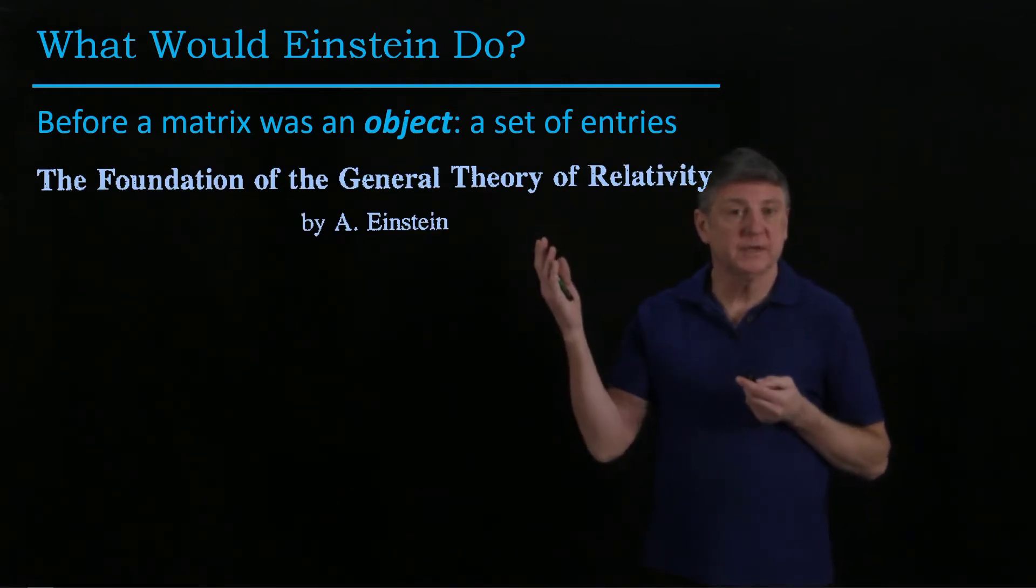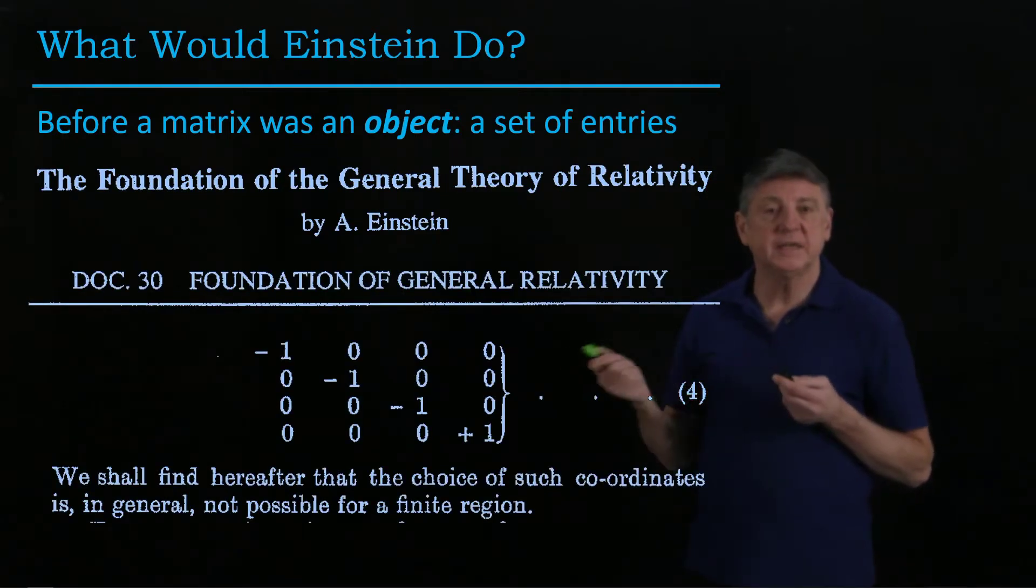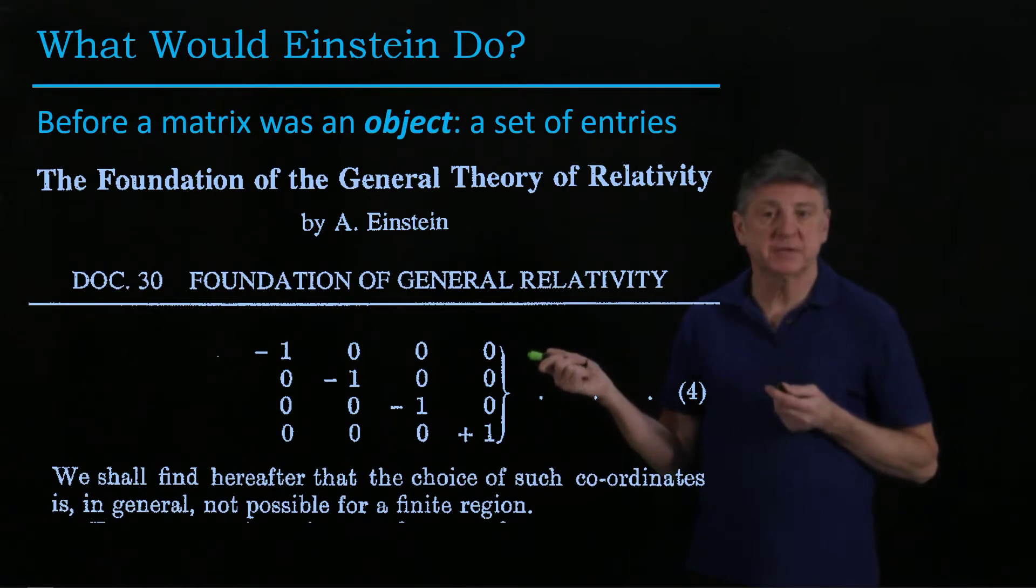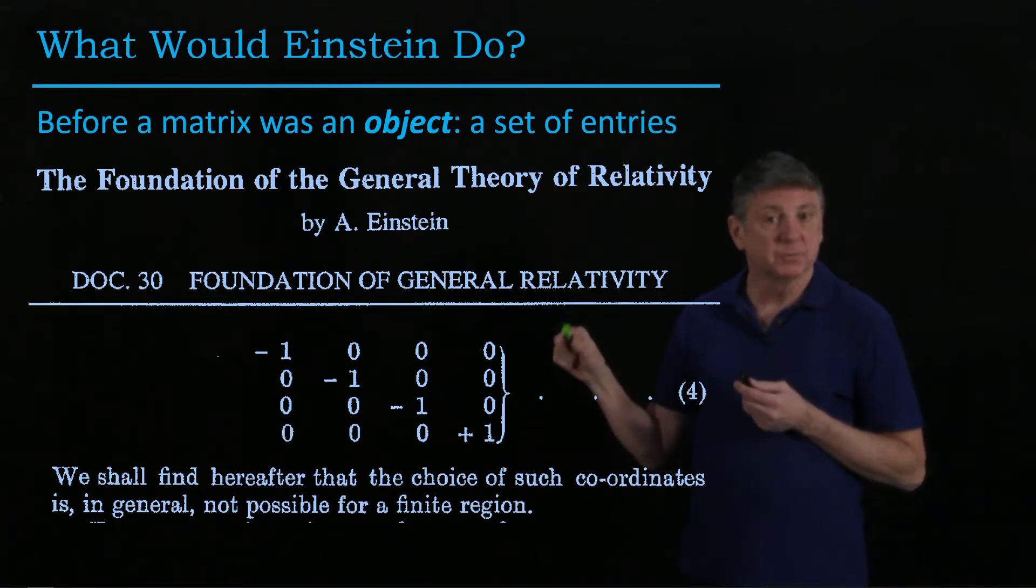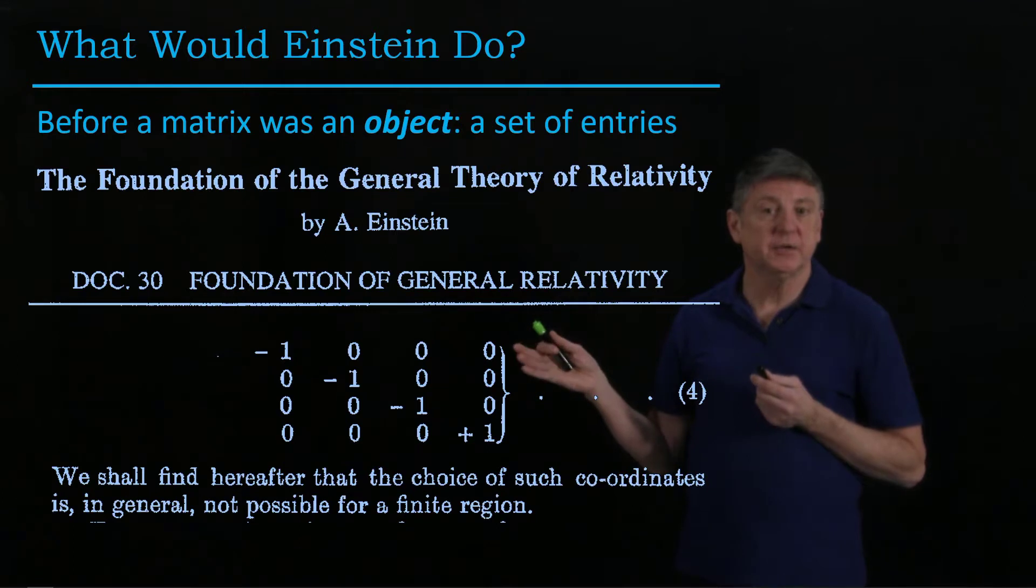So when we start exploring his paper, what we see is, for example, he represents the metric tensor in this way, and this is not how we would represent it nowadays. We would have square brackets, and they would be on both sides. Here he has a curly bracket, and it's only on one side.